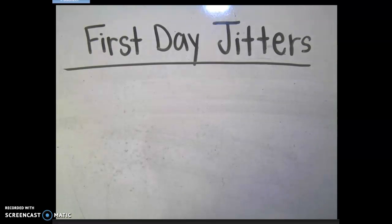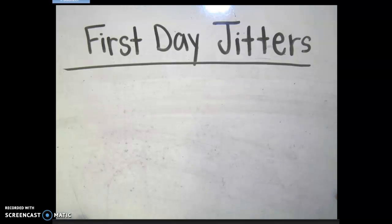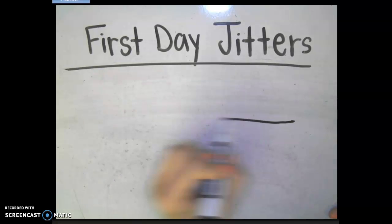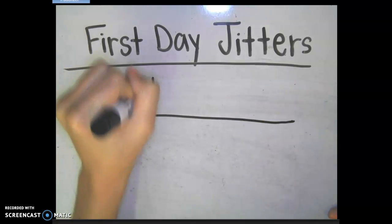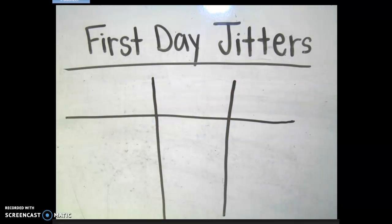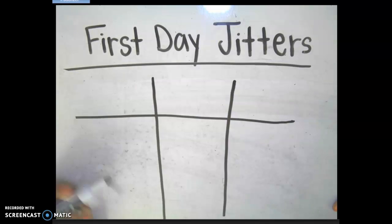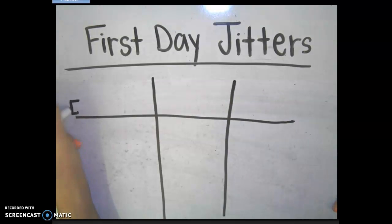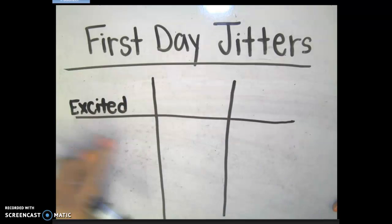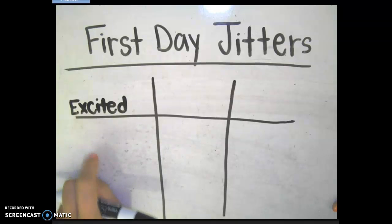Now that everyone has voted about how they feel about the first week of school, I'm going to use a t-chart to help me set up my data. This t-chart looks a little different — I have three different types of feelings, so I need three columns. In this first column, I'm going to write 'excited' and record how many people were excited using tally marks down here.